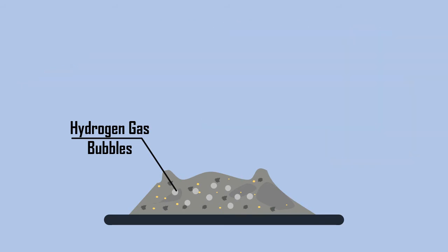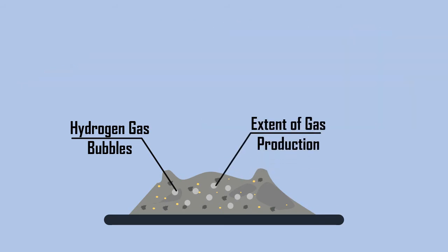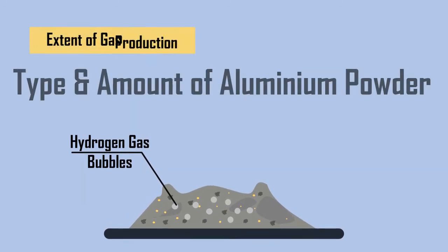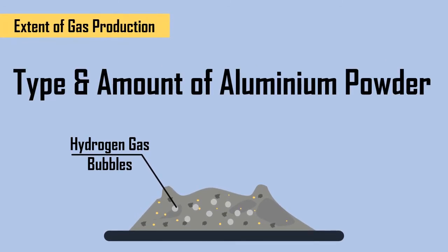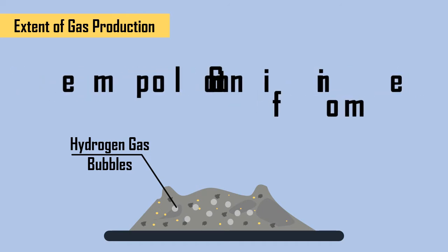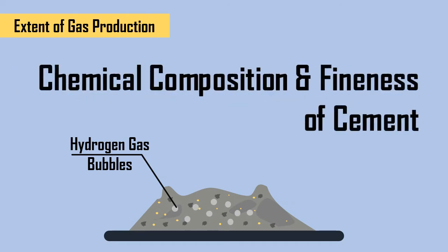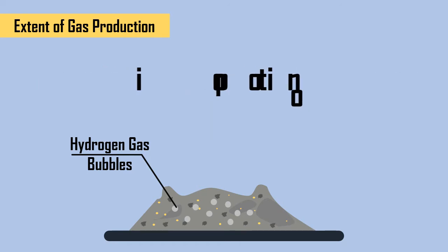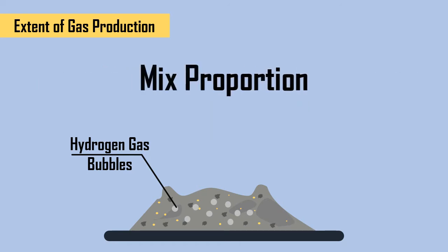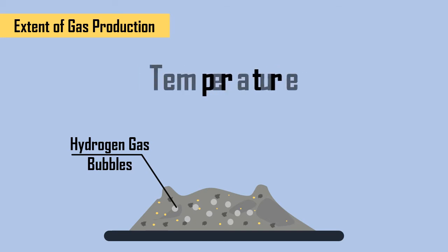The extent of gas production depends upon the following factors: type and amount of aluminum powder, chemical composition and fineness of cement, mix proportion, and temperature.